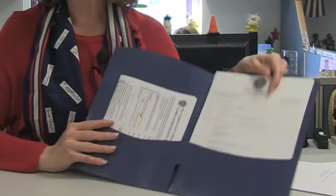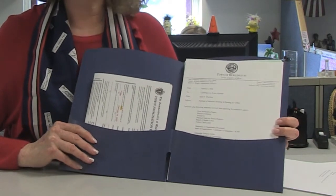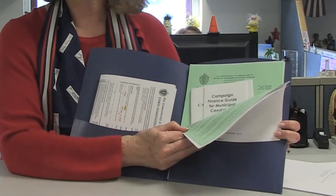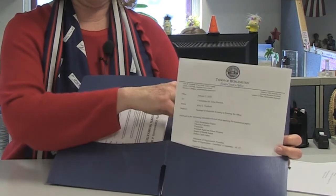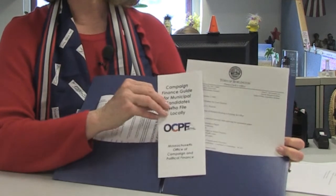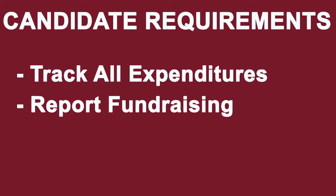Anyone who is running for town-wide office needs to be able to keep track of all of those expenditures. You are able to do fundraising, and you also have the ability to set up a committee of people that are going to help you run for the office. But you are required to track all of that and turn those reports back in here to the town clerk's office.